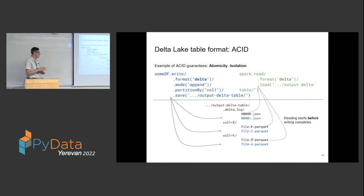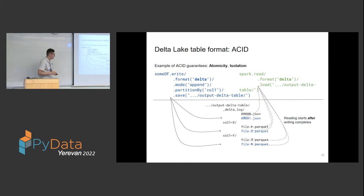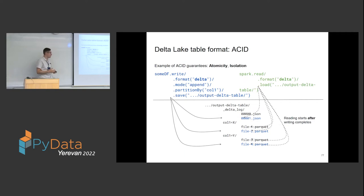If the reading starts after the writing completes, the reader will see the new commit and will read all the files including the newly added ones. This ensures atomicity and isolation — the reader either sees the full previous state or the full new state, never a partial write.